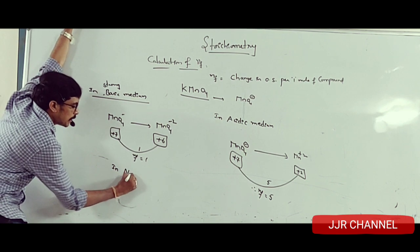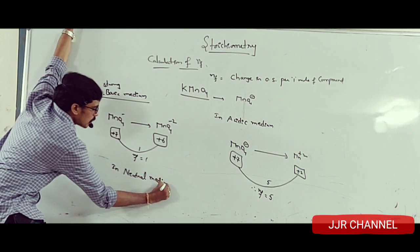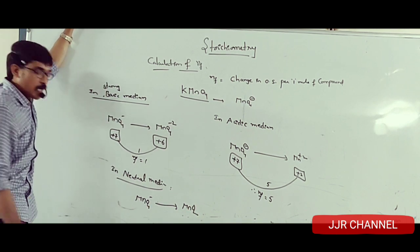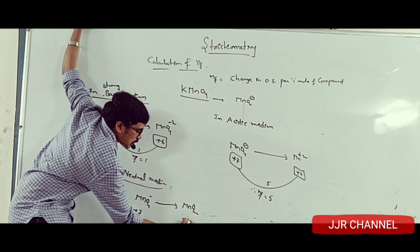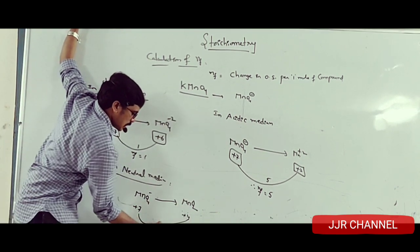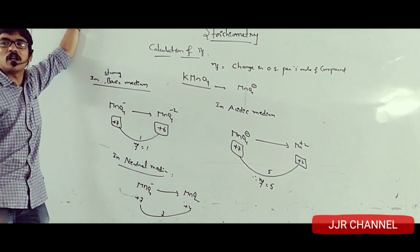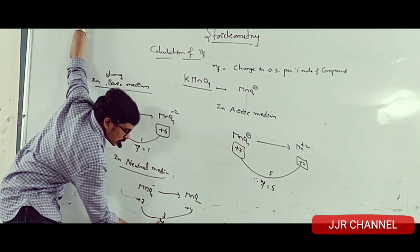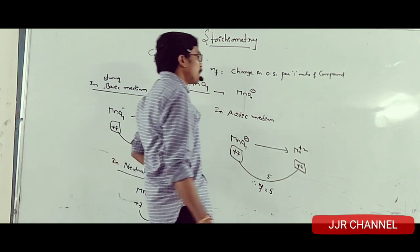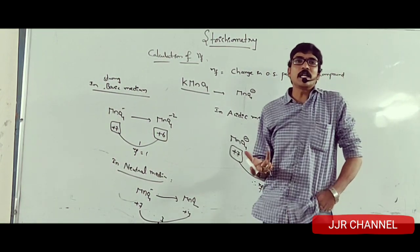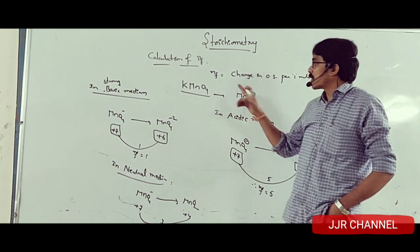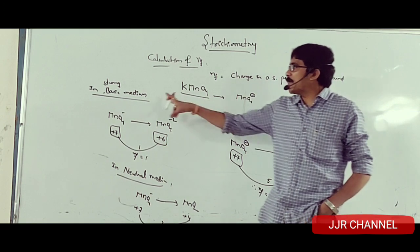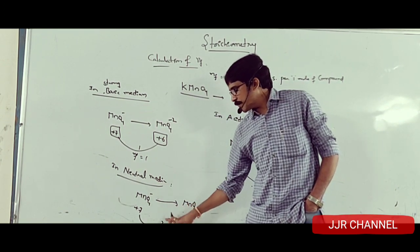In neutral medium, MnO4 minus is converted to MnO2. The permanganate ion has oxidation state plus seven, and MnO2 has oxidation state plus four. Therefore, the change in oxidation state is three. This is also the n-factor because it is the change in oxidation state per one mole of the compound. Hence, n-factor in neutral medium is three.